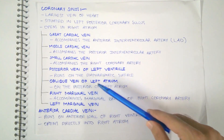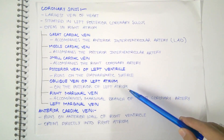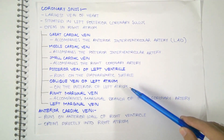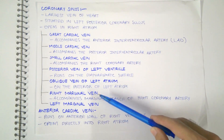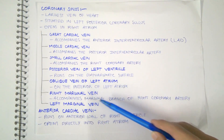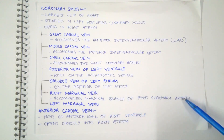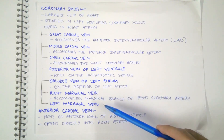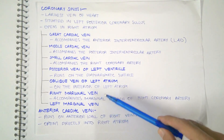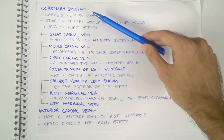The oblique vein of the left atrium, which is on the posterior surface of the left atrium; the right marginal vein, which accompanies the marginal branch of the right coronary artery; and the left marginal vein. These are all the veins that drain into the coronary sinus and then into the right atrium.